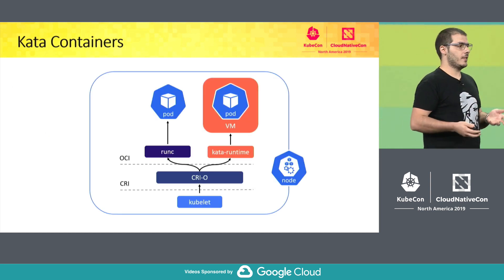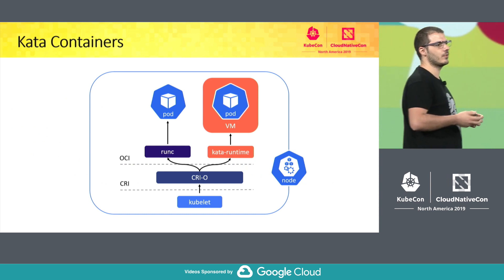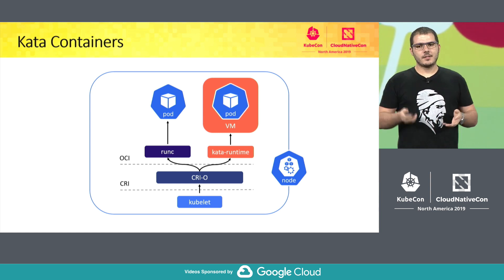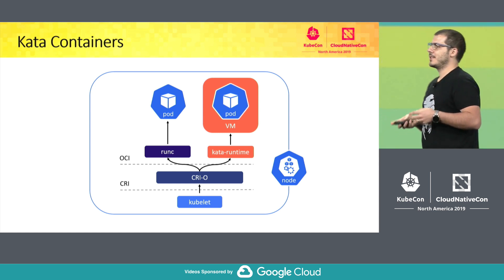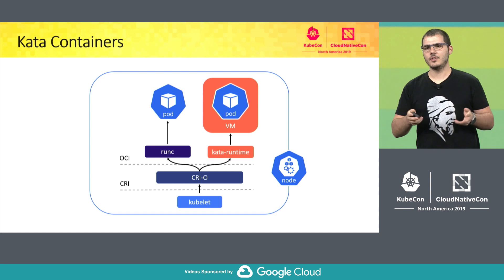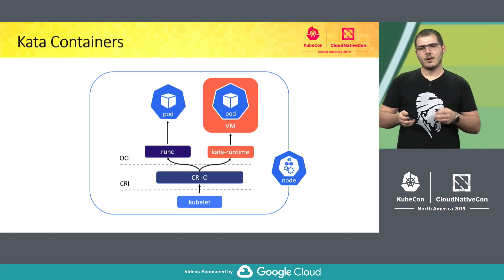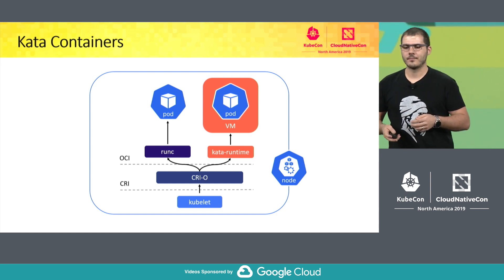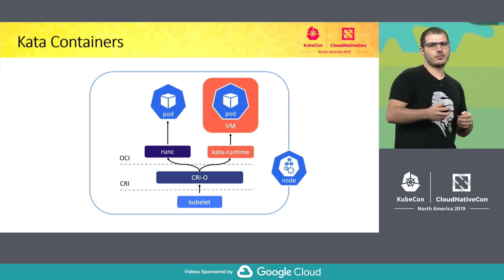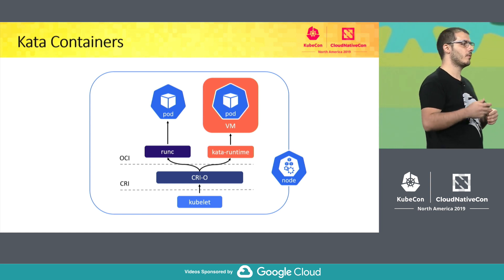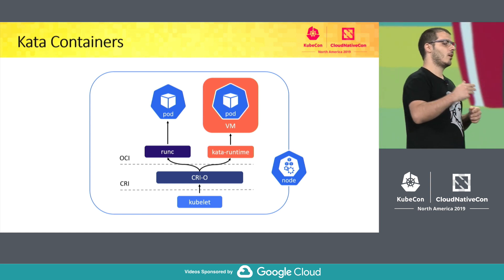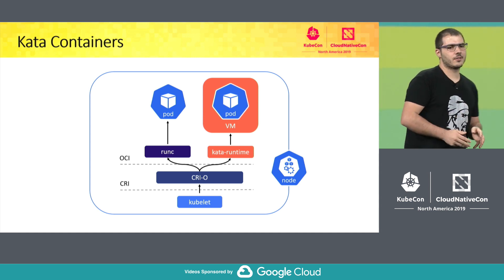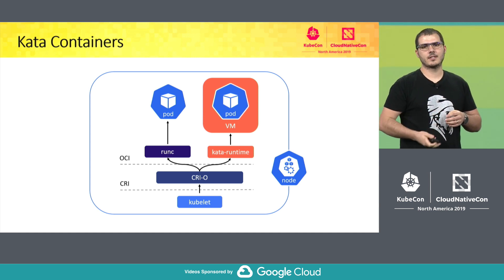If our application runs untrusted software, then we need advanced multi-tenant sandboxing, because the security features of the Linux kernel namespaces are not enough. This is the case for Adobe Experience Manager, which is a content management system application that can run software written by Adobe customers. In Ethos, we can choose to run our application using Kata, and then our pods are going to run on top of lightweight virtual machines that provide almost the same performance as containers, but with the security advantages of a VM.